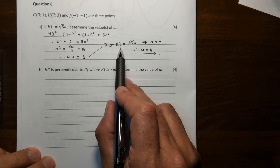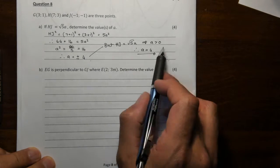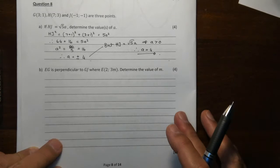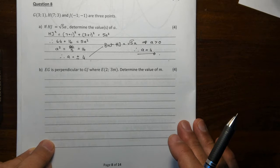HJ, we gave to you as root 5A. HJ is a length. This is already positive, so that has to be positive. From here, you can say A has to be bigger than 0. Therefore, A can only be 4. Because we gave you the length here as HJ, and length is only positive. Without this bit of reasoning here, you are not going to get the full marks for this question. So A is only 4.